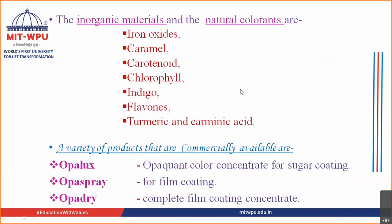Examples of inorganic materials and natural coloring agents used traditionally are iron oxides, caramels, carotenoids, chlorophyll, indigo, flavones, turmeric, and carminic acid.